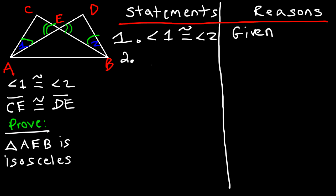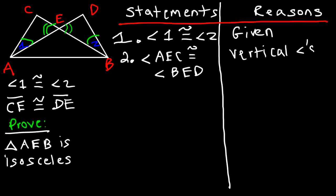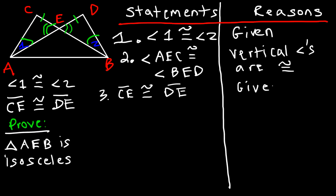Statement three: CE is congruent to DE — that's given. Mark it on the diagram. Now we have enough information to prove the two triangles are congruent.